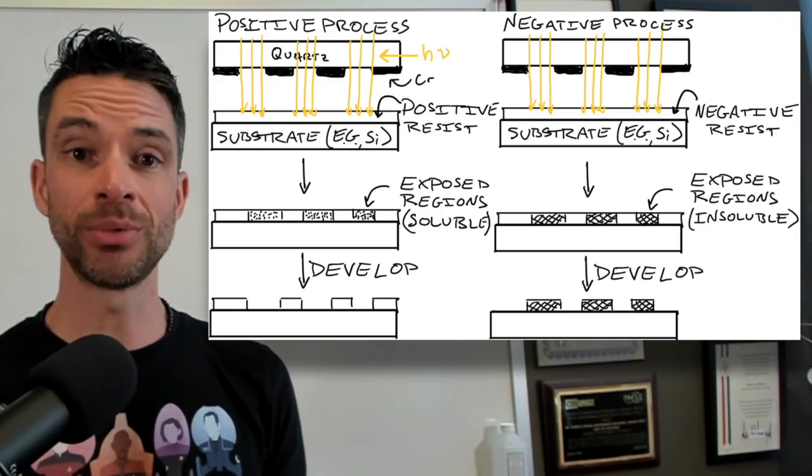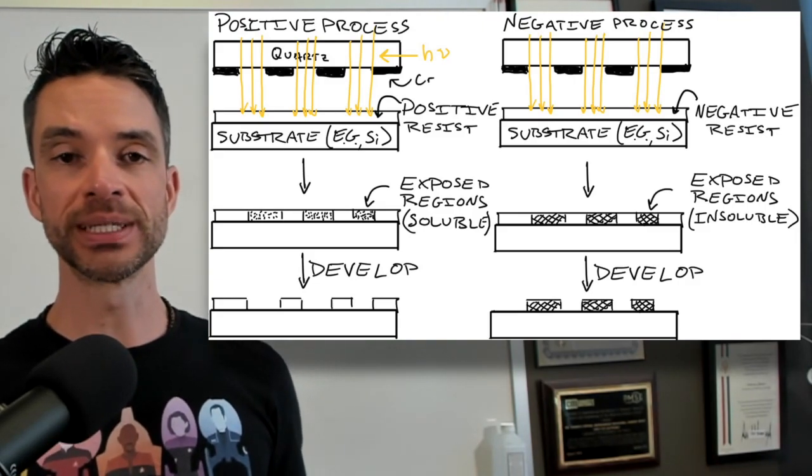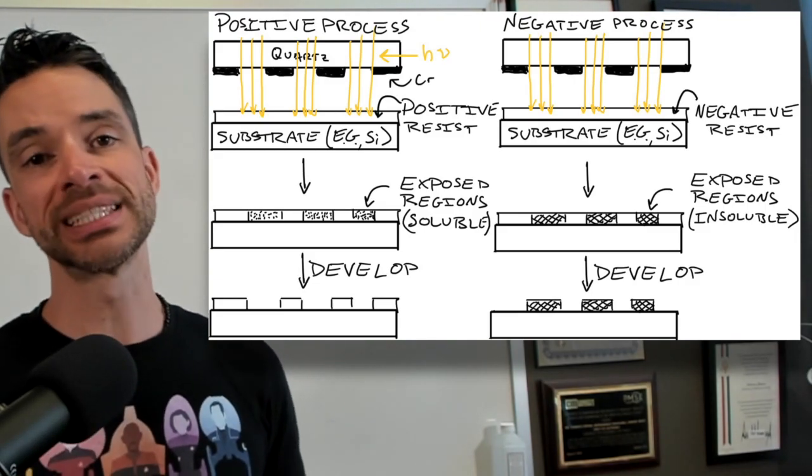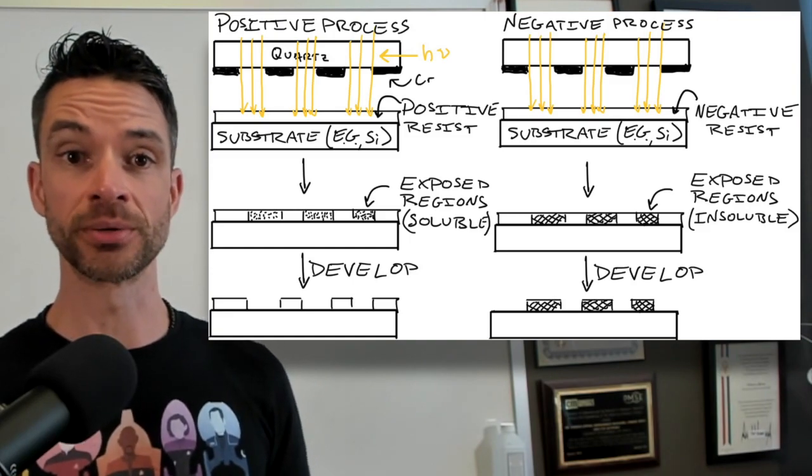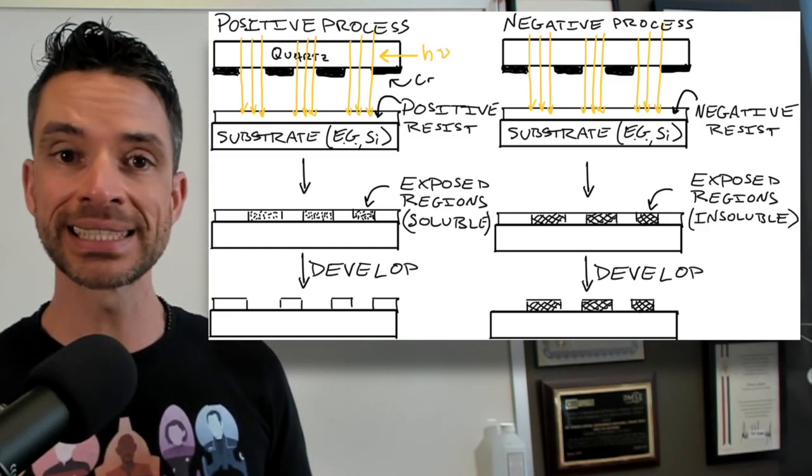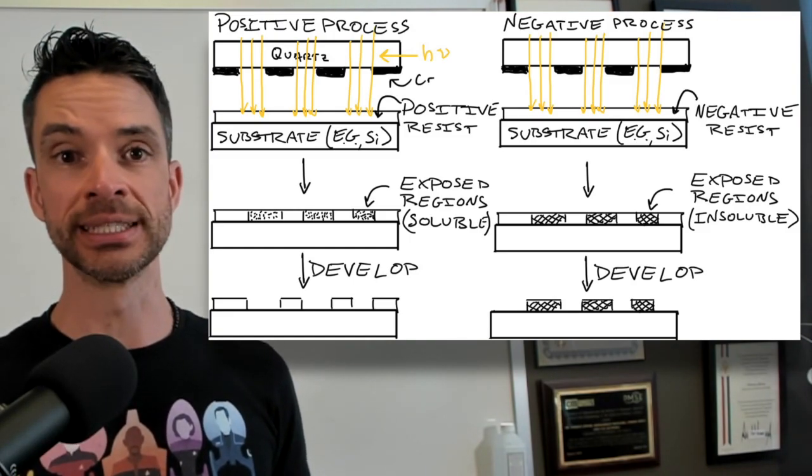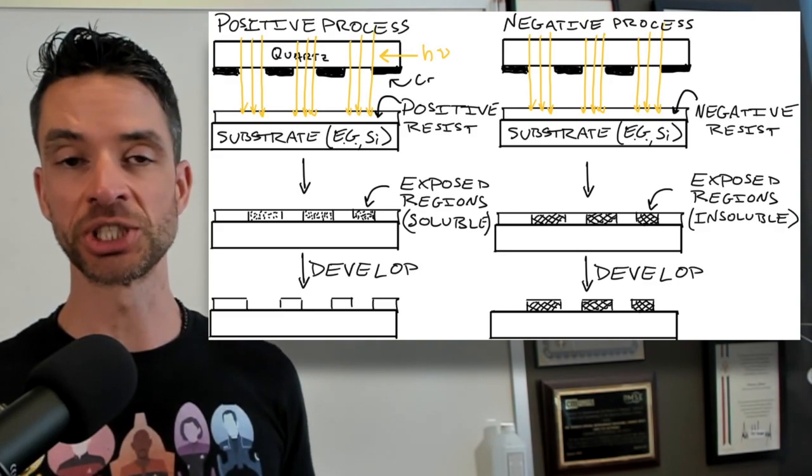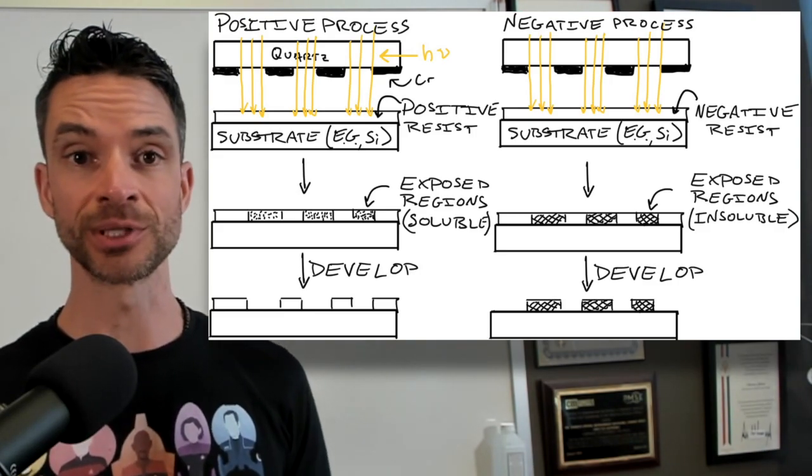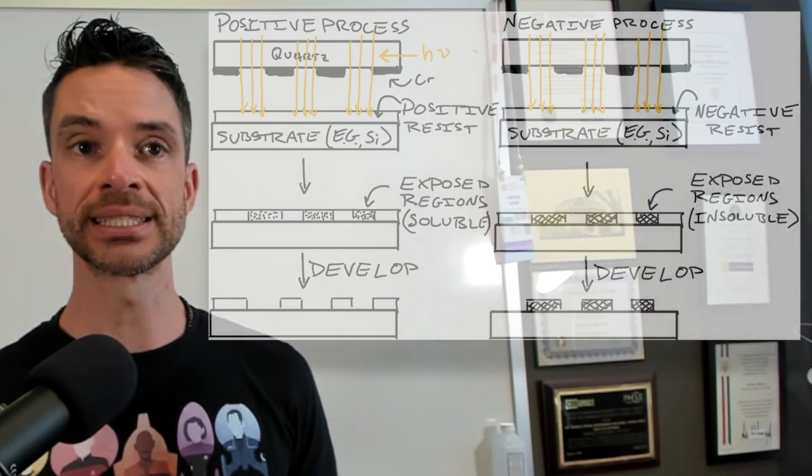On the other side, we have negative photoresist. And negative photoresist produces the opposite image from positive photoresist. So light passes through the mask, and then it hardens the resist film in the areas in which it impinges. And that's the difference between positive and negative photoresist.